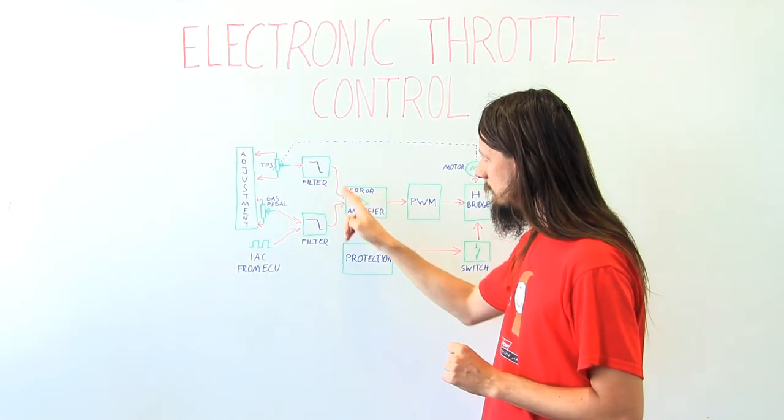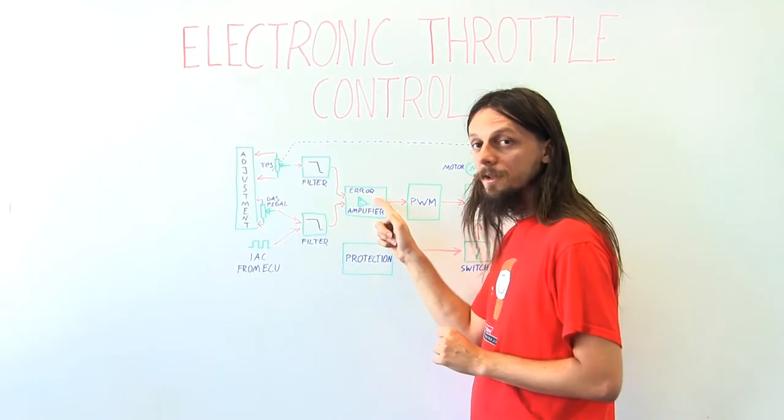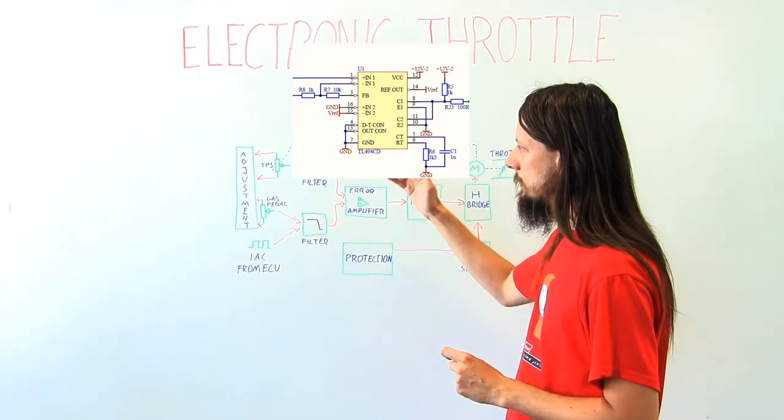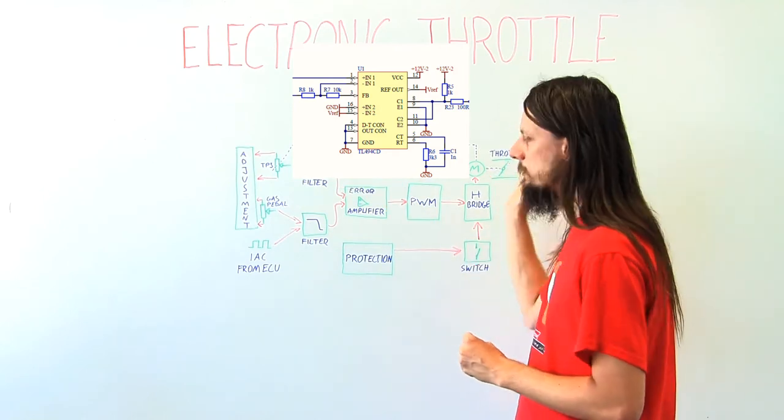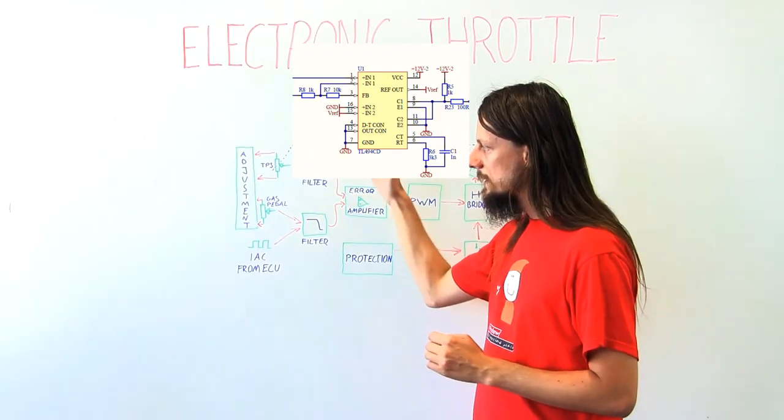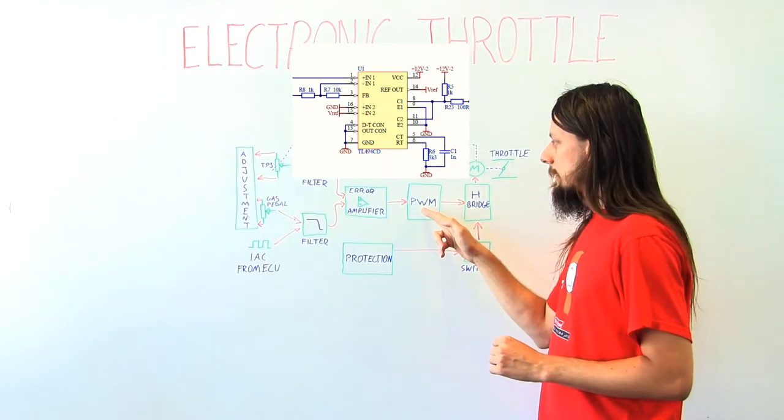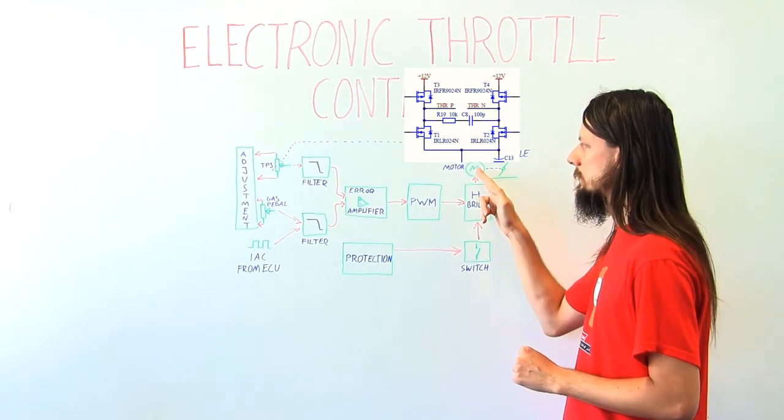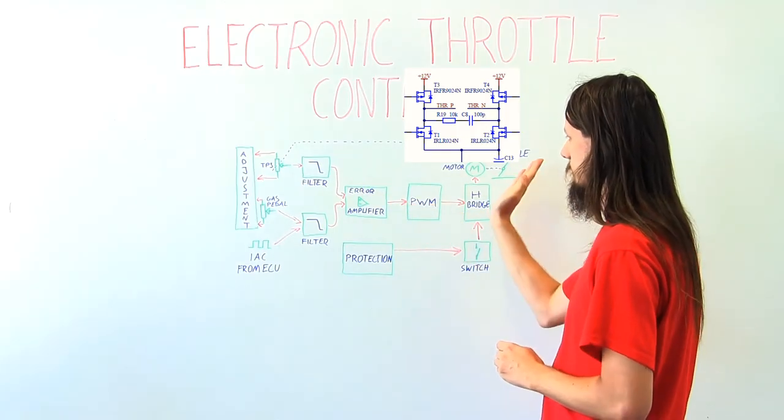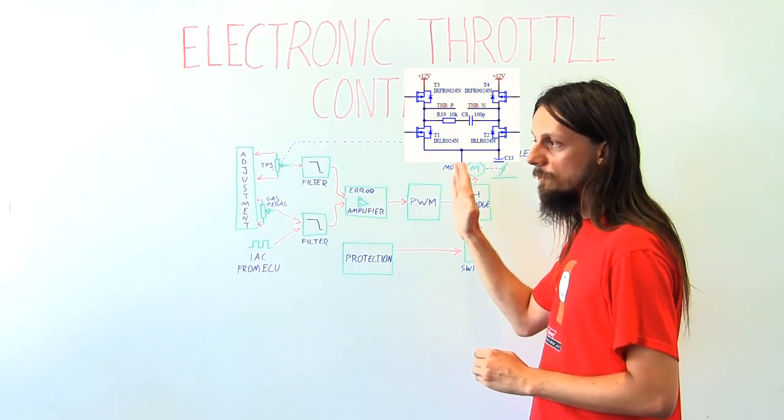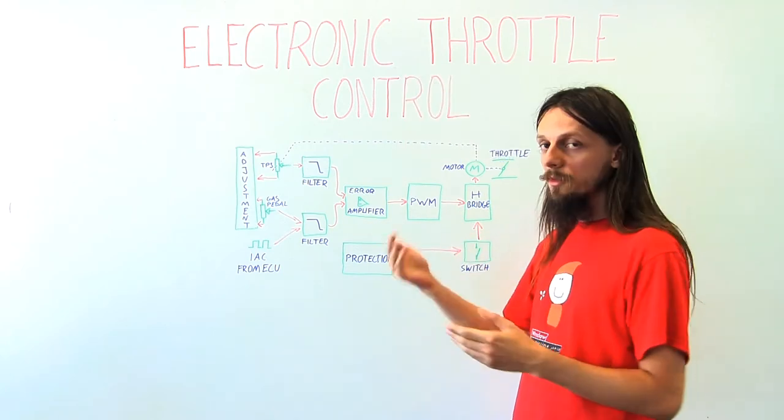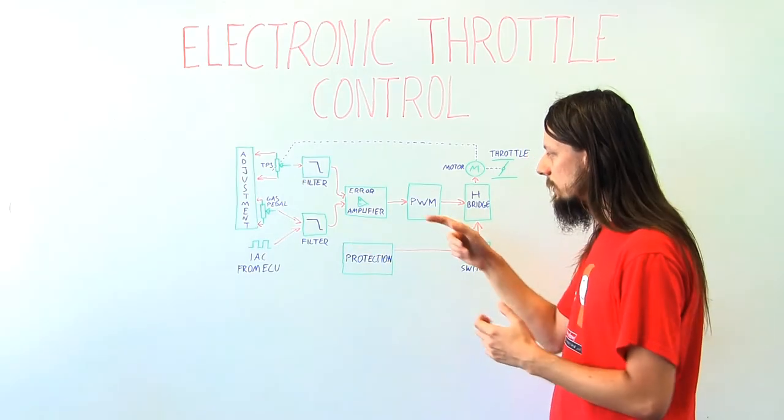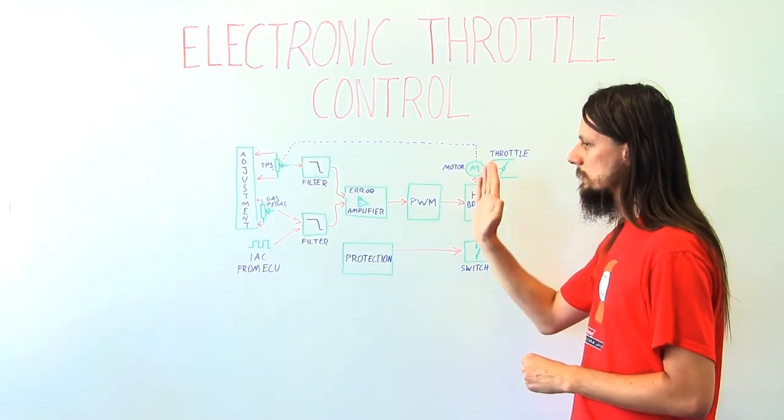So it's filtered and both those signals are going into the so-called error amplifier. It will compare the signal from the TPS and from the gas pedal. If the TPS says that the throttle is opened more than we actually wanted, so the signal from the TPS is higher than the gas pedal, then it will make the PWM signal lower. The PWM signal then controls this H-bridge, transistor bridge that controls the motor. Eventually it will just tell the motor to move the throttle a bit towards the closed position. In the other way, when we want it to be opened more, we step on the gas pedal. The signal here will be higher. The error amplifier will then increase the PWM signal and via this transistor bridge the motor will move the throttle to the open position.